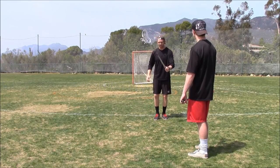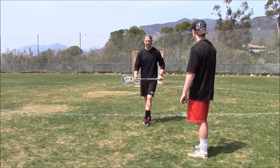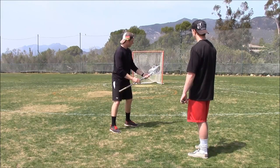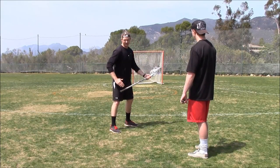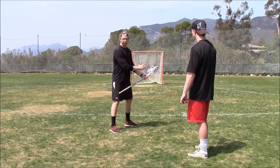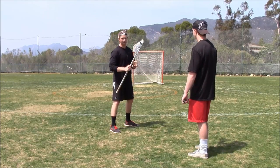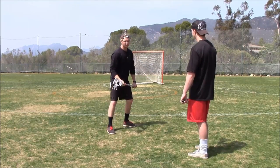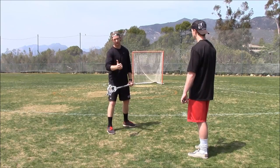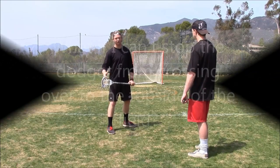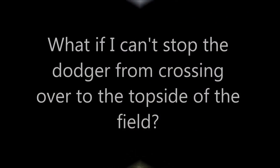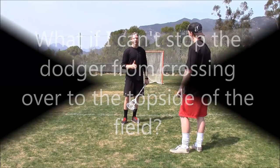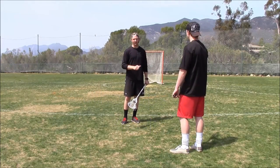I also want my stick in the upfield position. I don't want my stick on the downfield side, because even visually it looks like a block to the downhill side. Keeping it on the upfield side will further deter him from going across the top of the goal.